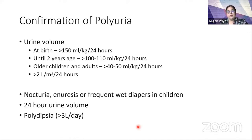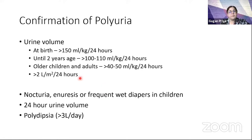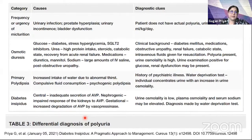How do we confirm polyuria? For adults, it's more than 50 ml per kg per 24 hours, but for children under two years of age, it's 100-110 ml per kg per 24 hours. Documentation of actual urine volume helps rule out patients who only have increased frequency or urgency of micturition and not true polyuria. People with polydipsia will typically be consuming more than 3 liters of water per day, sometimes even higher than 12 liters.